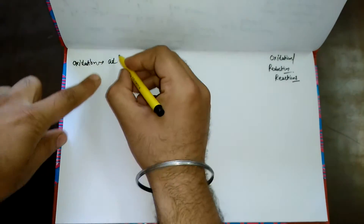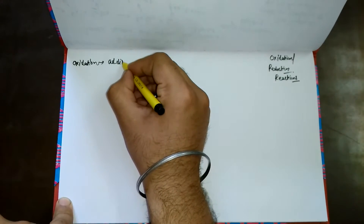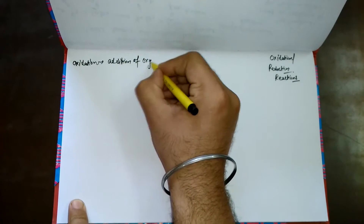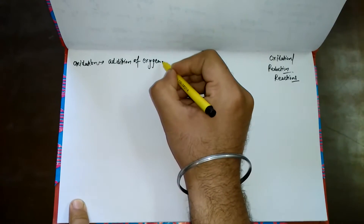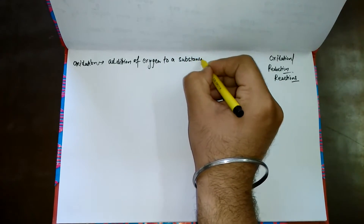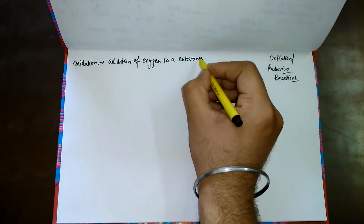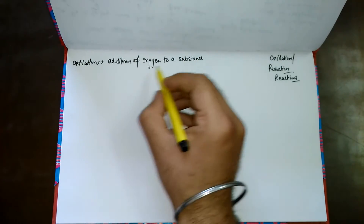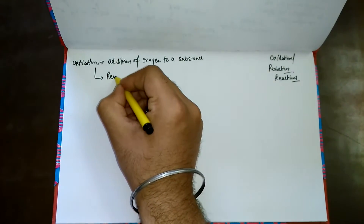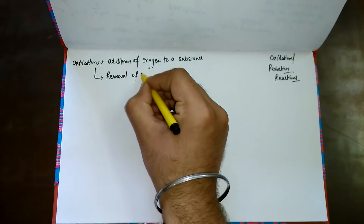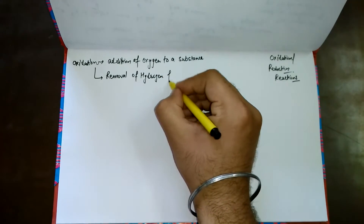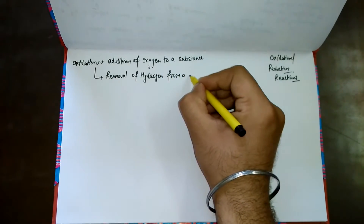So oxidation takes place when there is an addition of oxygen to a substance. Similarly, if there is a removal of hydrogen from a substance, we also call that oxidation.